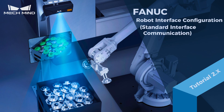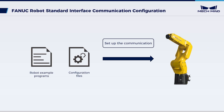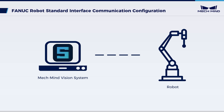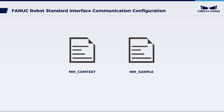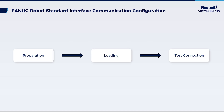This video introduces how to load the standard interface program files to a FANUC robot. Loading involves importing robot programs and configuration files into the robot system to establish communication between the vision system and the robot. We will load standard interface communication configuration files and robot example programs. These can assist us in deploying projects. Now, let's proceed with the detailed operational steps.